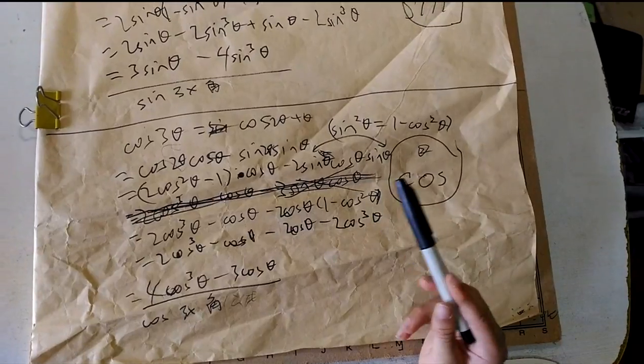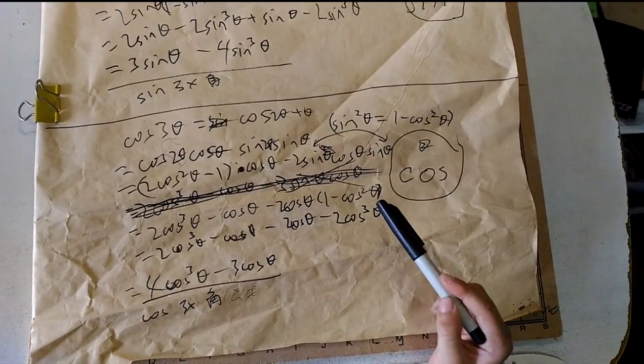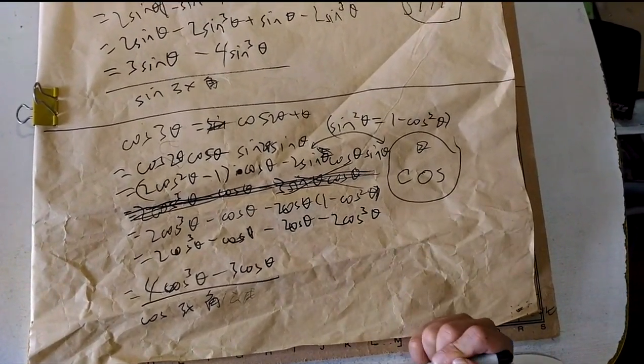So first of all, 2 cosine times 1 is 2 cosine. 2 cosine times cosine squared is 2 cosine cubed.